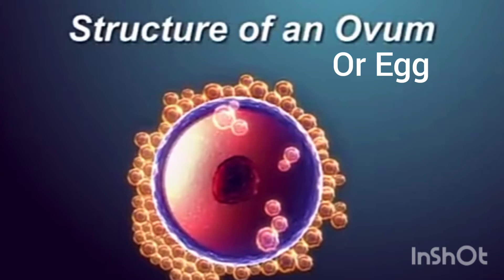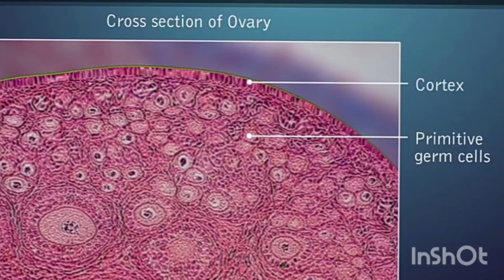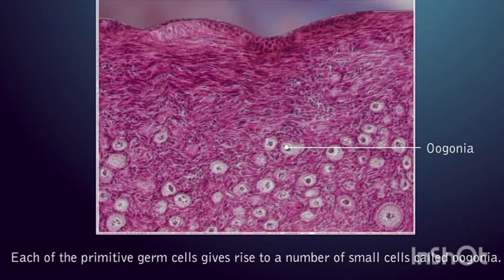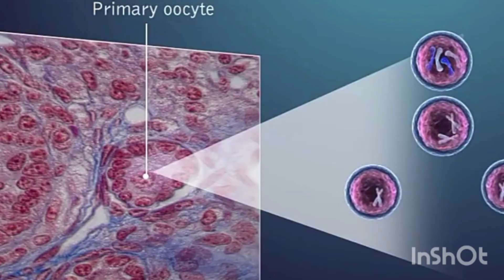We will discuss the topic of the egg. The egg, or ovum, is the one called female gamete, which is nearly always non-motile. It contains cytoplasm and a large nucleus known as germinal vesicle. The cytoplasm contains a certain amount of reserve food in the form of yolk.